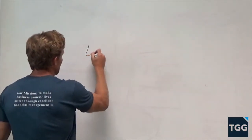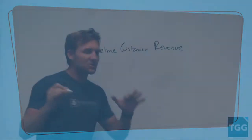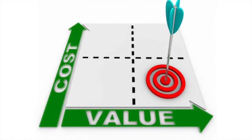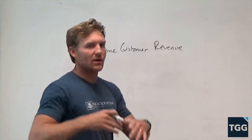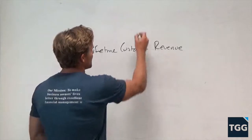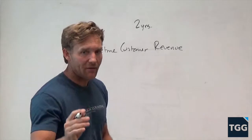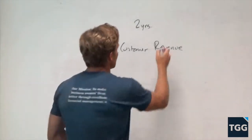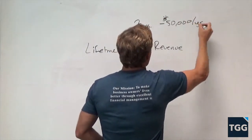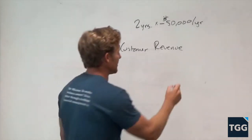The first thing we're going to do is figure out your lifetime customer revenue. This is how much money is coming in from your customer on average. I'm going to assume you have customers in some kind of a service business — it works for a product business as well. Let's say your customers are going to stay around for two years and your average customer is going to give you $50,000 of revenue per year. You multiply these two together, which means your lifetime customer revenue is $100,000.